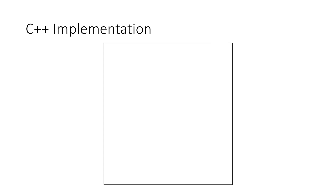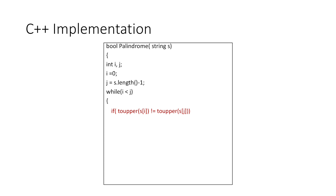Now let's implement this in C++. We start our palindrome function, which takes a string s as an argument and returns a boolean value, either true or false, indicating whether string s is a palindrome. We declare two variables i and j, setting i equal to zero (the first index) and j equal to the length of the string minus one (the last index). We then start a while loop for i less than j. Inside the loop, we use the toupper function to convert every character to uppercase, then check whether both characters are equal. If they are not equal we return false, and if they are equal we increment i and decrement j to move to the next pair of characters. If all corresponding characters are equal, we return true.